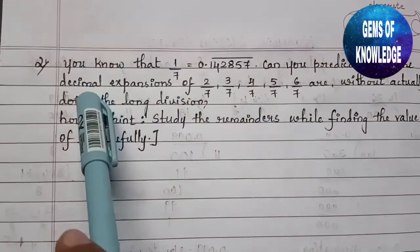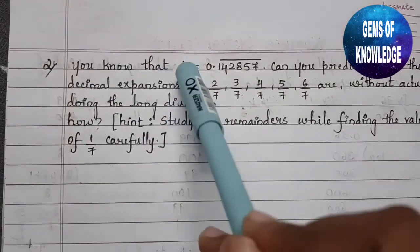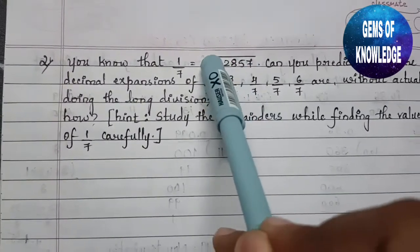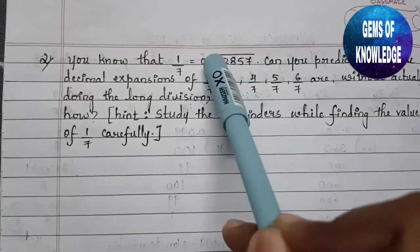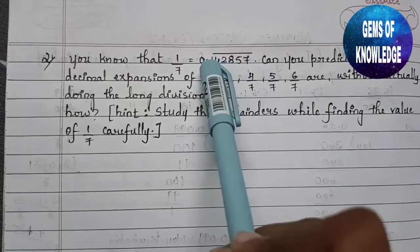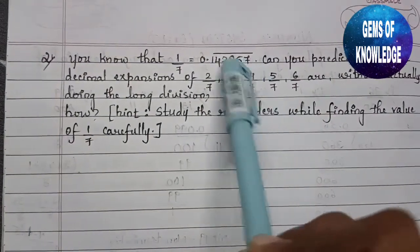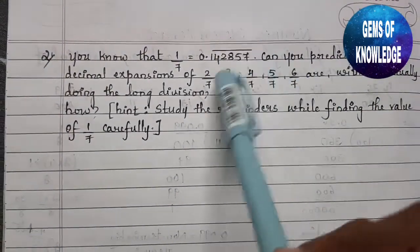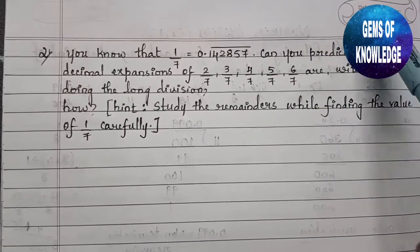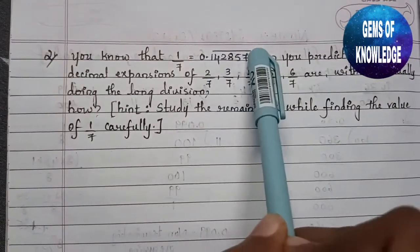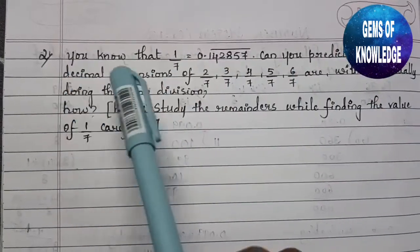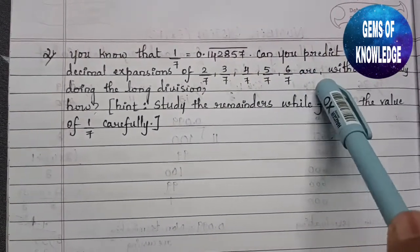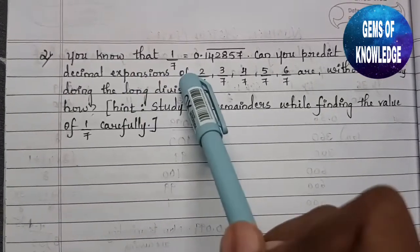The second question is: given that 1/7 = 0.142857̄, where the bar represents that after the 7th decimal place the digits 142857 repeat again. Can you predict the decimal expansion of 2/7, 3/7, 4/7, 5/7, and 6/7 without actually doing the long division?